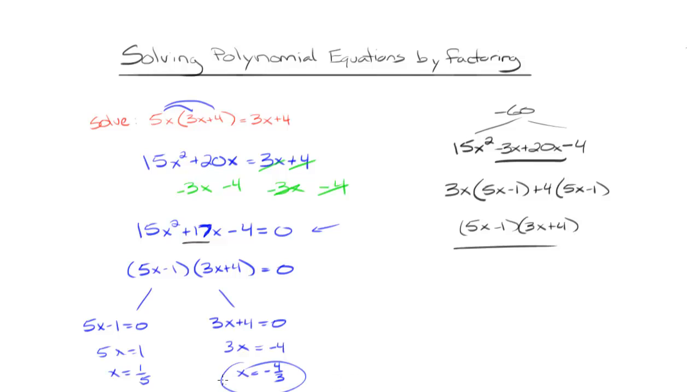So the two solutions to this equation are x = 1/5 and x = -4/3.